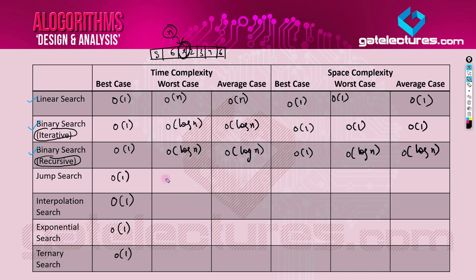For jump search, the worst case time complexity is O(√n). There is a particular scenario where we can achieve O(√n) as the worst case, which we will see in upcoming videos. The average case is also O(√n). The space complexity is always O(1) because it is an iterative implementation, not recursive — there is no benefit of a recursive implementation in jump search.